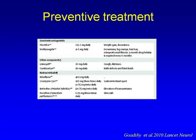Methysergide (Deseril) is not available in the United States but can be ordered from Canada or European countries — it's a very strong anti-serotonin agent and very effective for migraines. Lisinopril and candesartan were already mentioned. We also use alternative therapies including vitamin B2 (riboflavin), coenzyme Q10, butterbur — provided by a German company and approved in Germany — and feverfew. Combination supplements like MigraRelief combine magnesium, feverfew, and riboflavin.